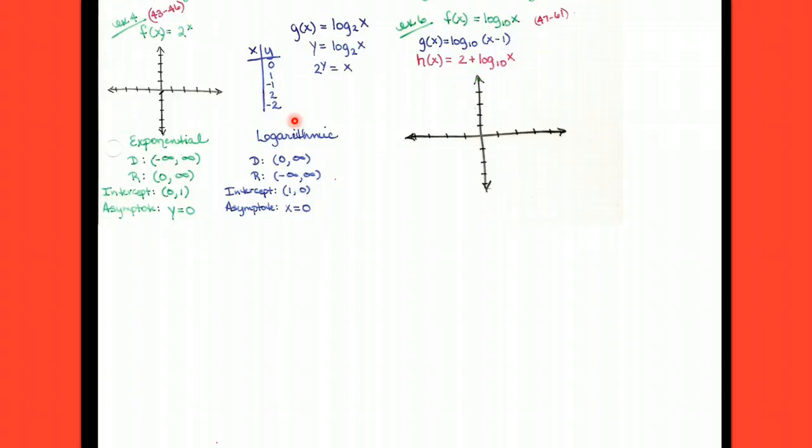Alright, so if we put 0 in for y, 2 to the 0 is 1. If we put 1 in for y, 2. If we put negative 1 in for y, if we put 2 in for y, and if we put negative 2 in for y. Good. Alright, so let's plot those points.